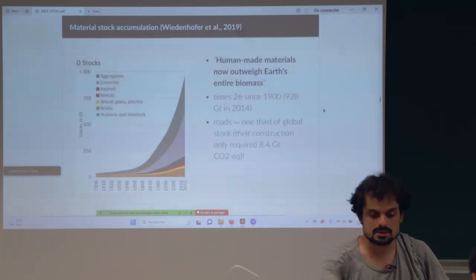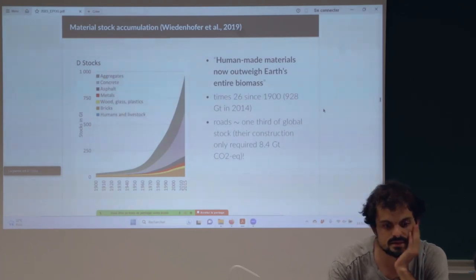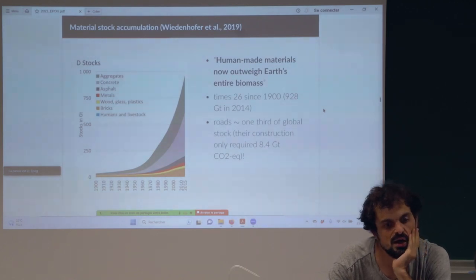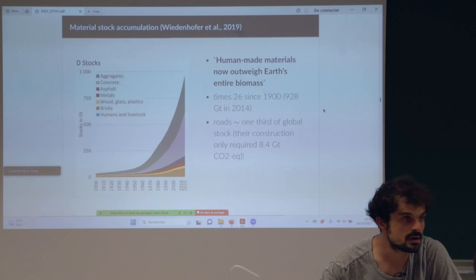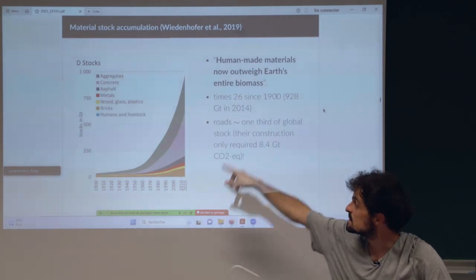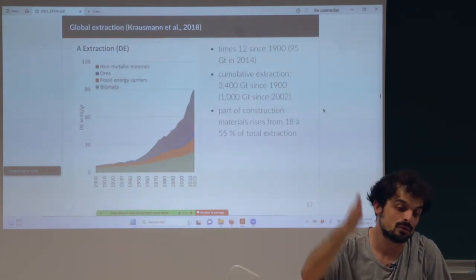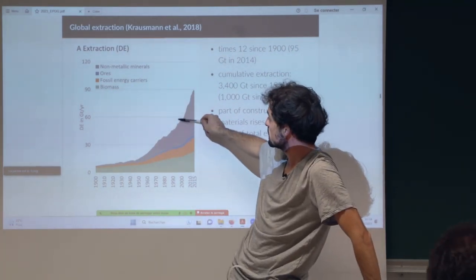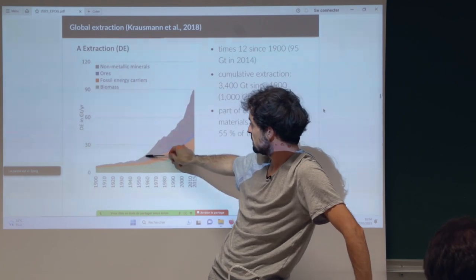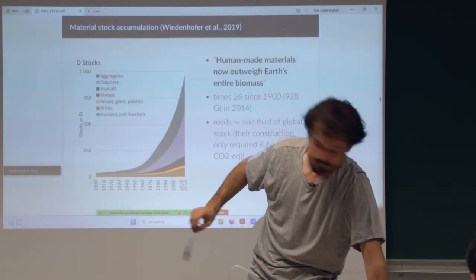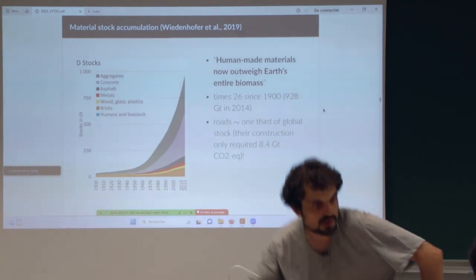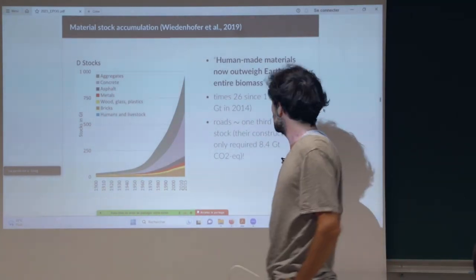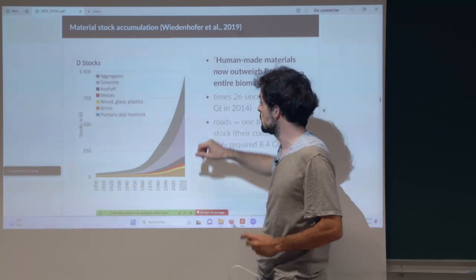If you look at material stocks, this is the same study from 2019. The increase is even bigger than material flows because stocks accumulate — the previous graph was annual flows, but in this graph it's an accumulation so it only increases. And again, you see that the world is made of sand and gravel — aggregates, basically gravel. This huge part is concrete, which is again sand and gravel. Then asphalt — bitumen with sand and gravel. All this part of the global stock is made from sand and gravel.